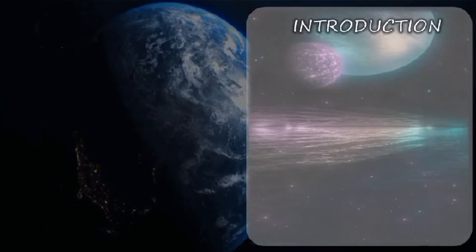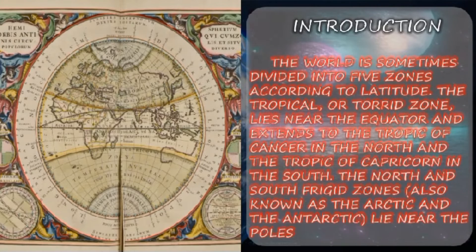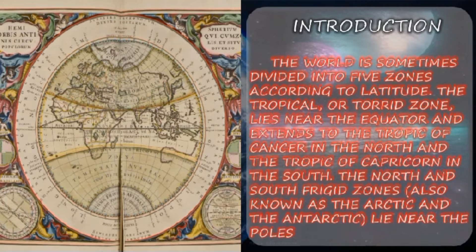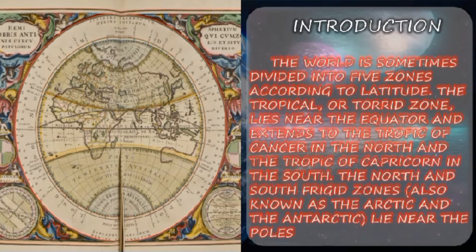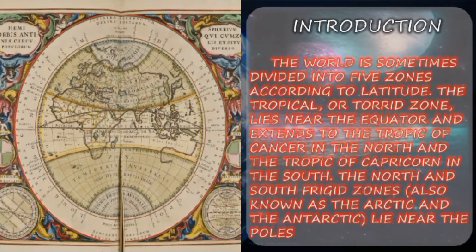Introduction. The world is sometimes divided into 5 zones according to the latitude. The tropical or torrid zone lies near the equator and extends to the Tropic of Cancer in the North and the Tropic of Capricorn in the South. The North and South Frigid zones, also known as the Arctic and Antarctic, lie near the poles. The Frigid zone refers to each of the two areas of the Earth, respectively north of the Arctic Ocean and south of the Antarctic Ocean.